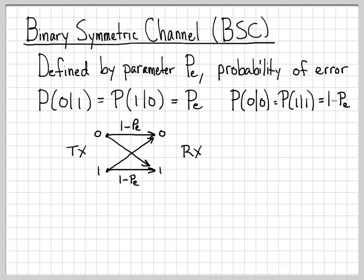The other correct decision path is on the bottom. If we've transmitted a 1 and received a 1, that occurs with probability 1 minus P sub E. The cross terms capture the error probabilities. So if I transmit a 0 but receive a 1, that's an error, which we denoted had error probability P sub E. And then finally, if I transmit a 1 but receive a 0, that's the same probability of error P sub E. So this is how we can picture mathematically what the binary symmetric channel looks like.